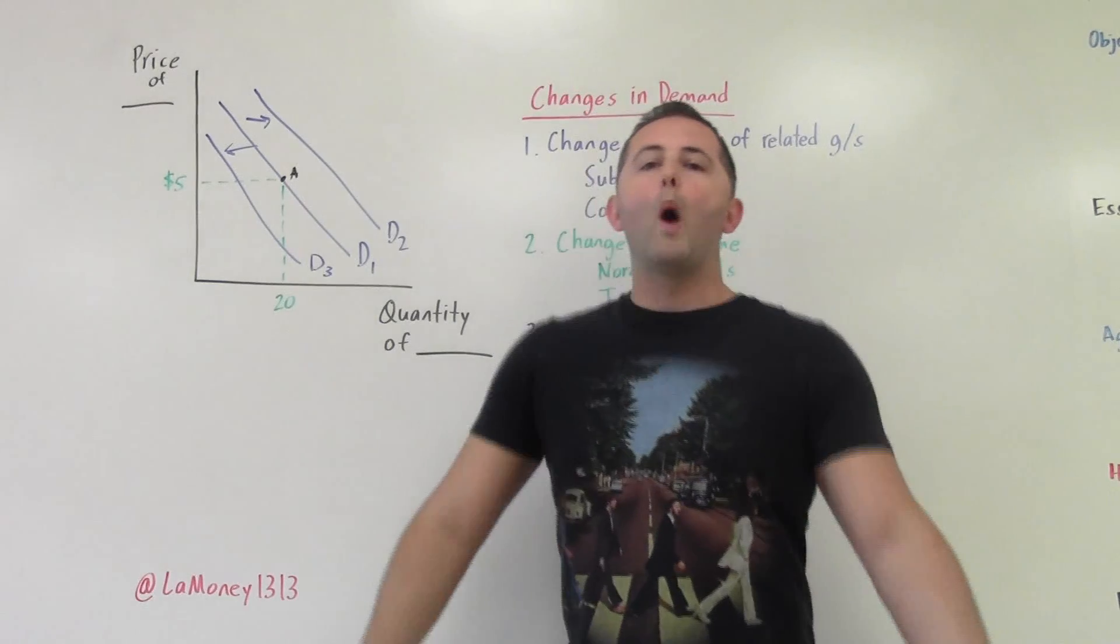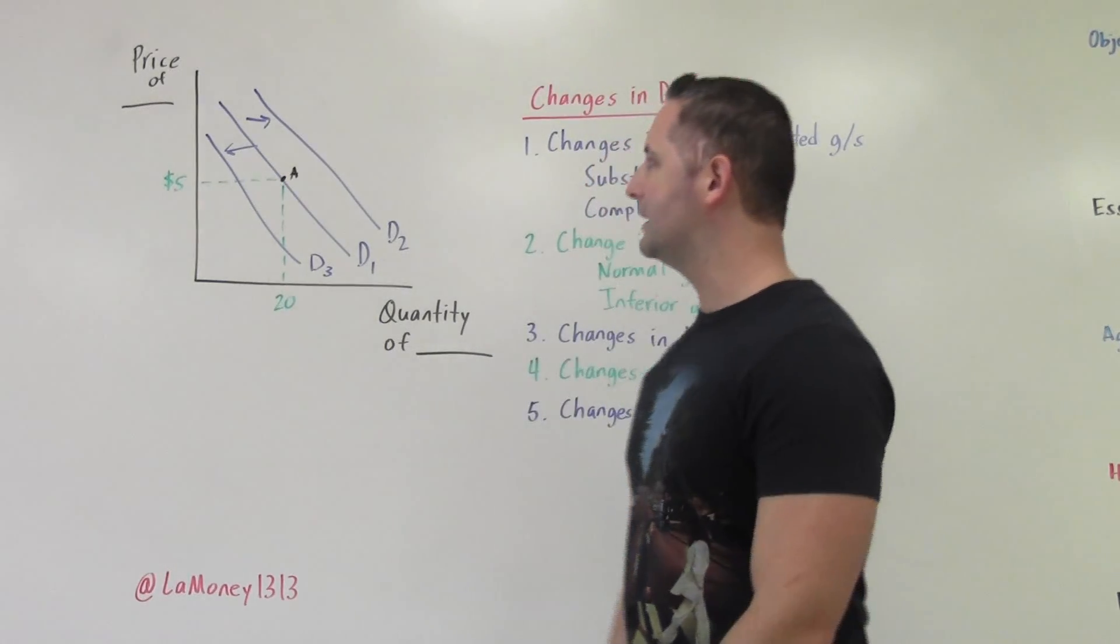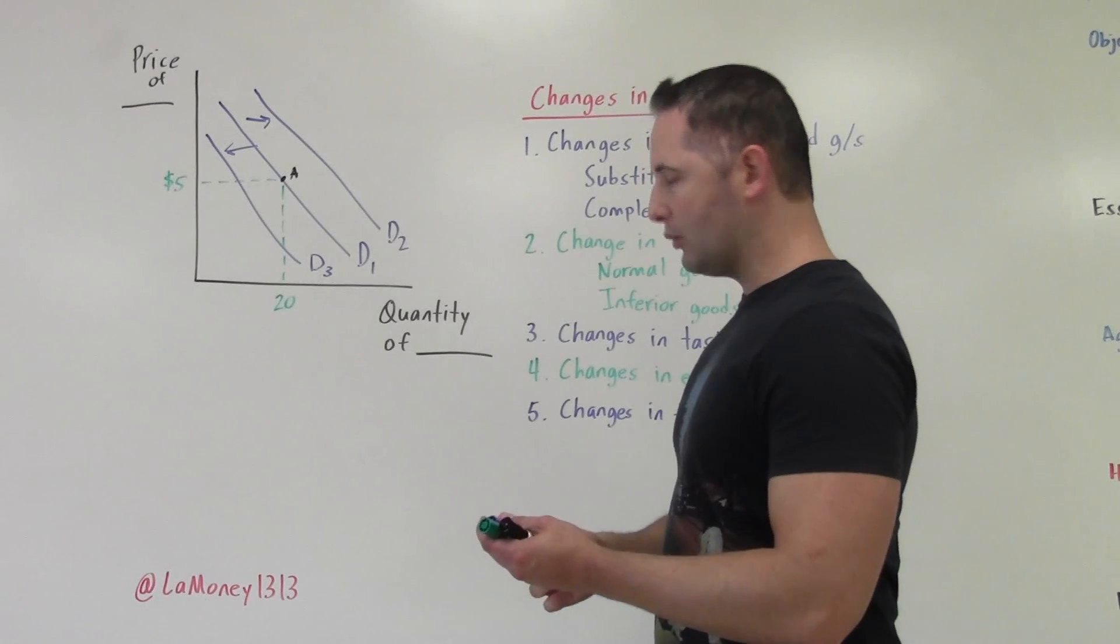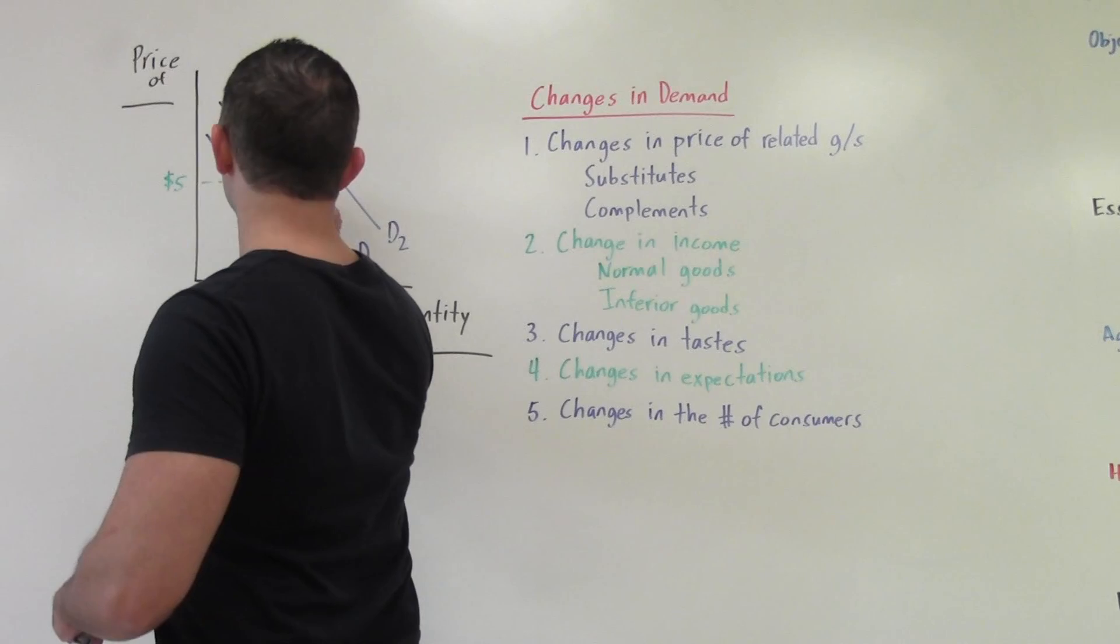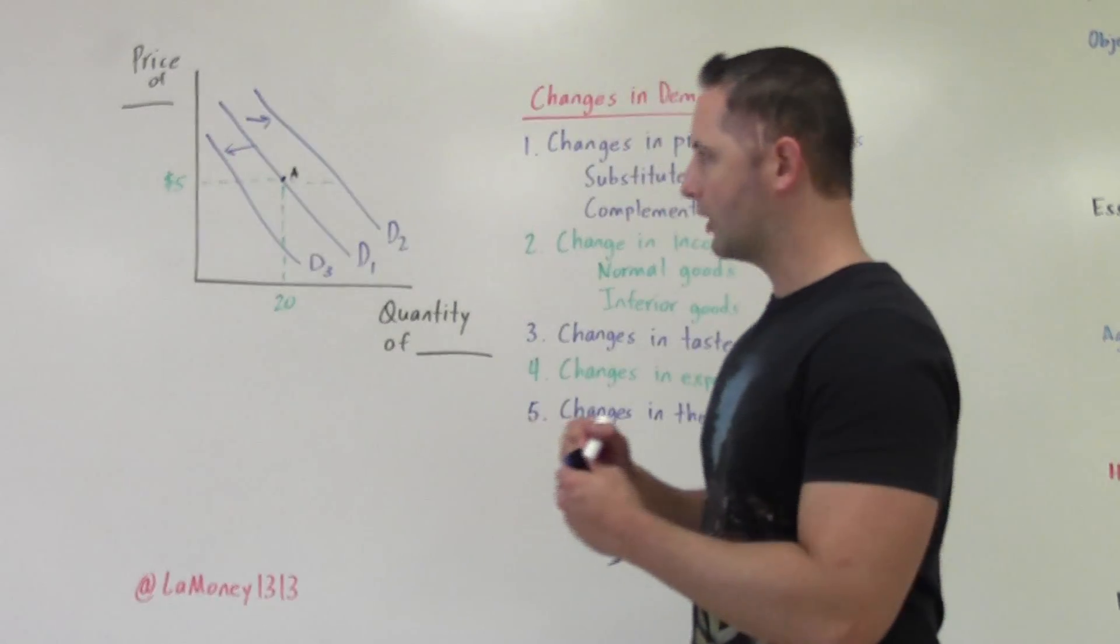So we have three demand curves on here. We know that's our first, second, third. So why did that happen? And what does it mean? Well, here's what it was not caused by. So let's start here. Our price is $5.